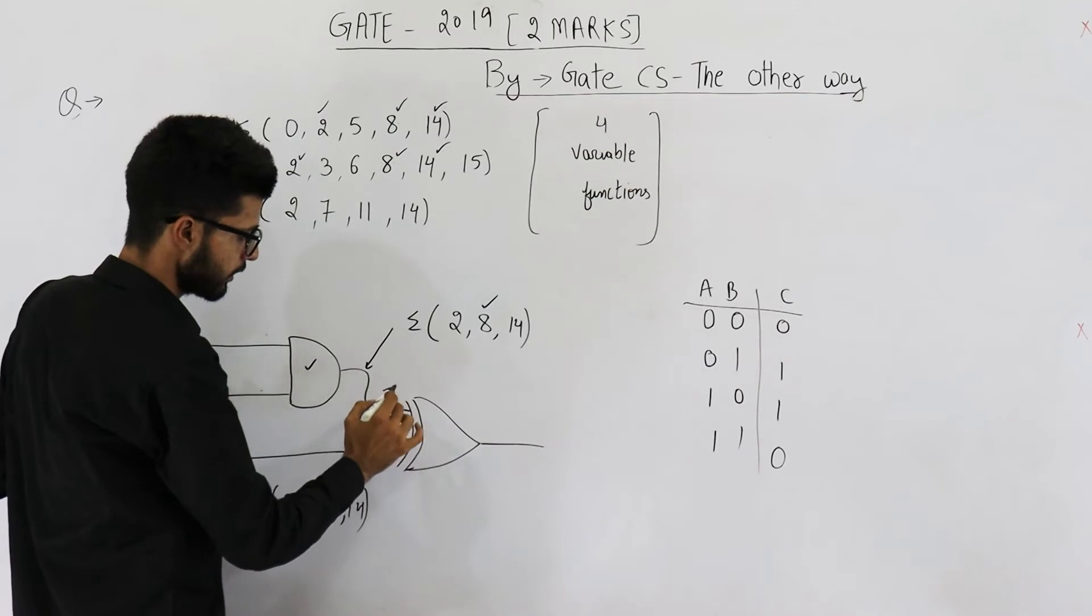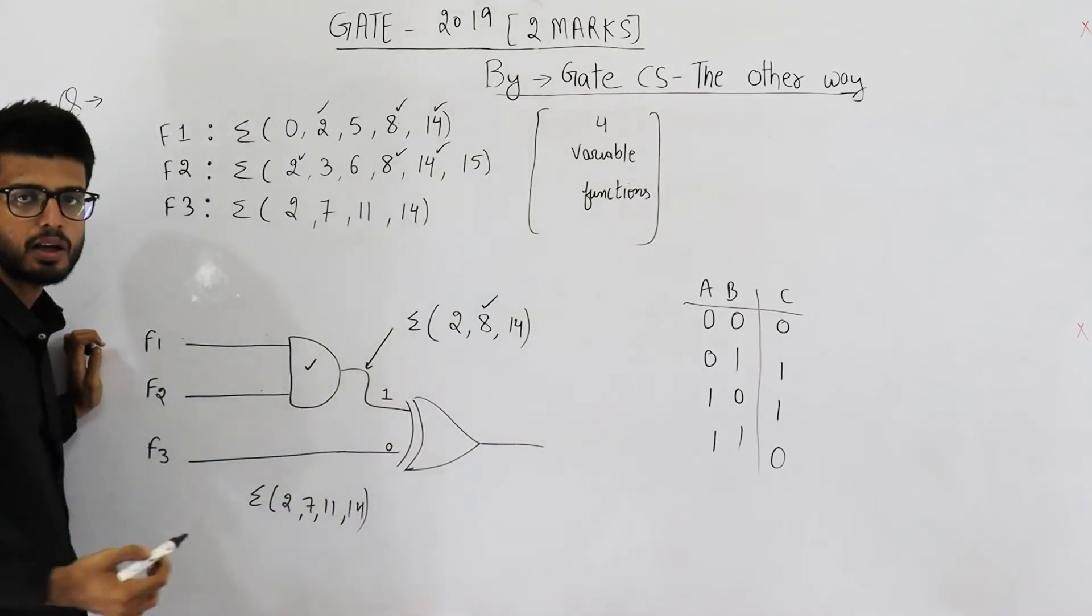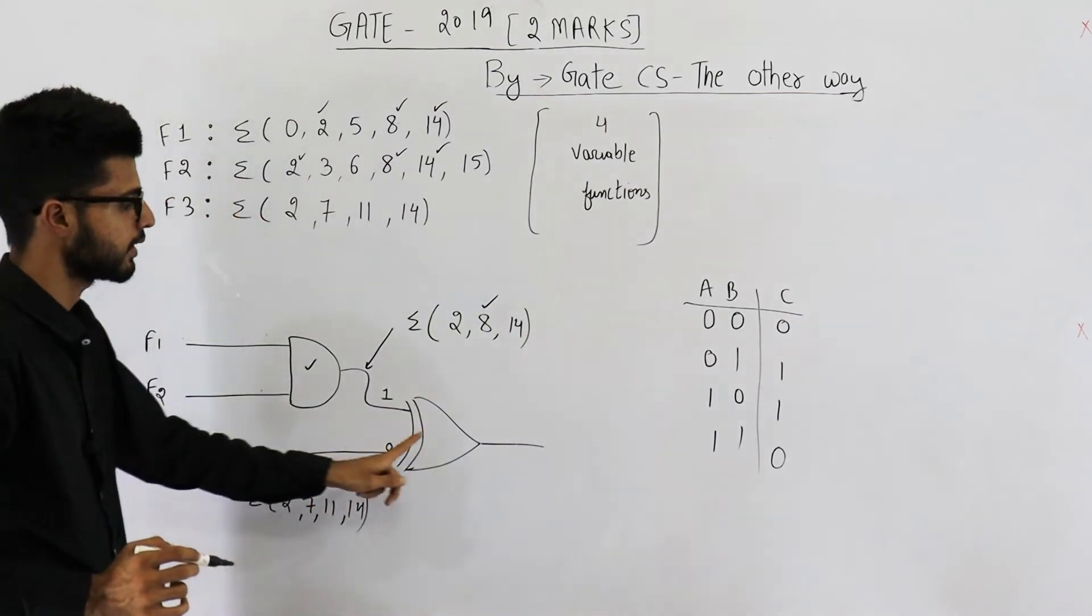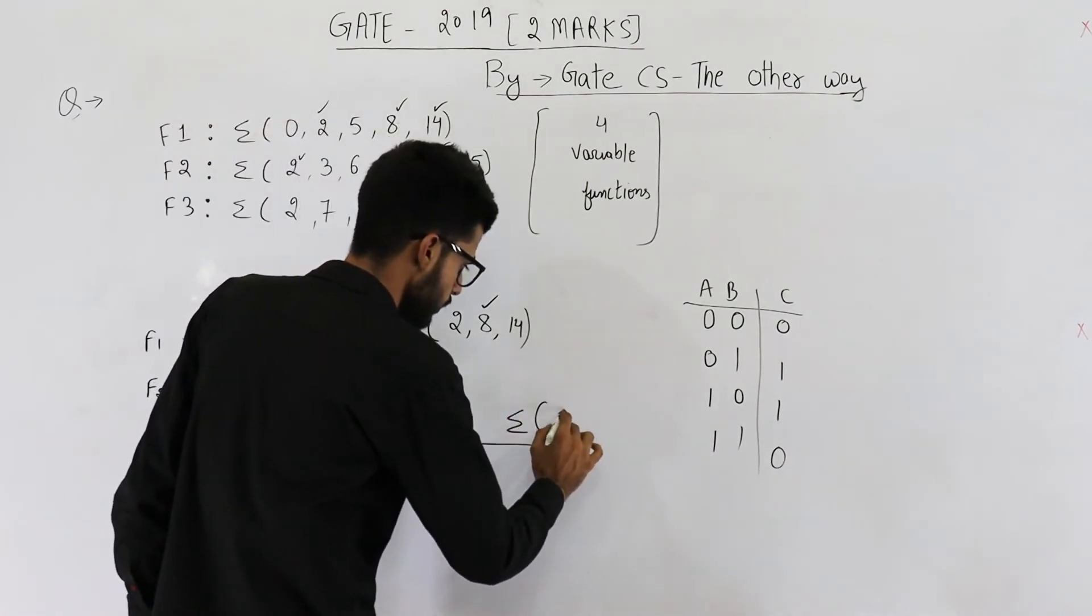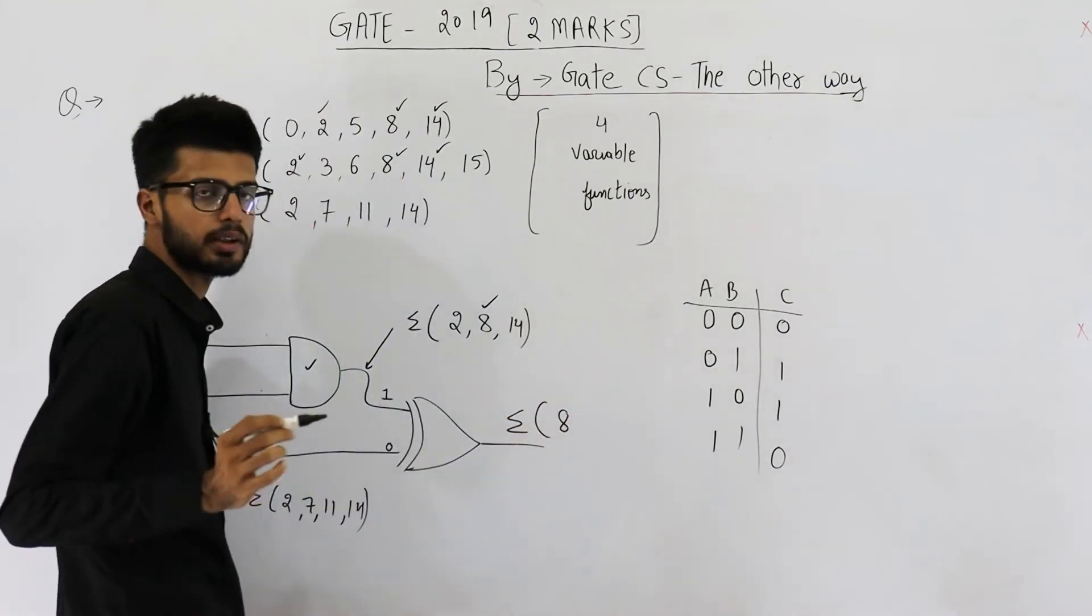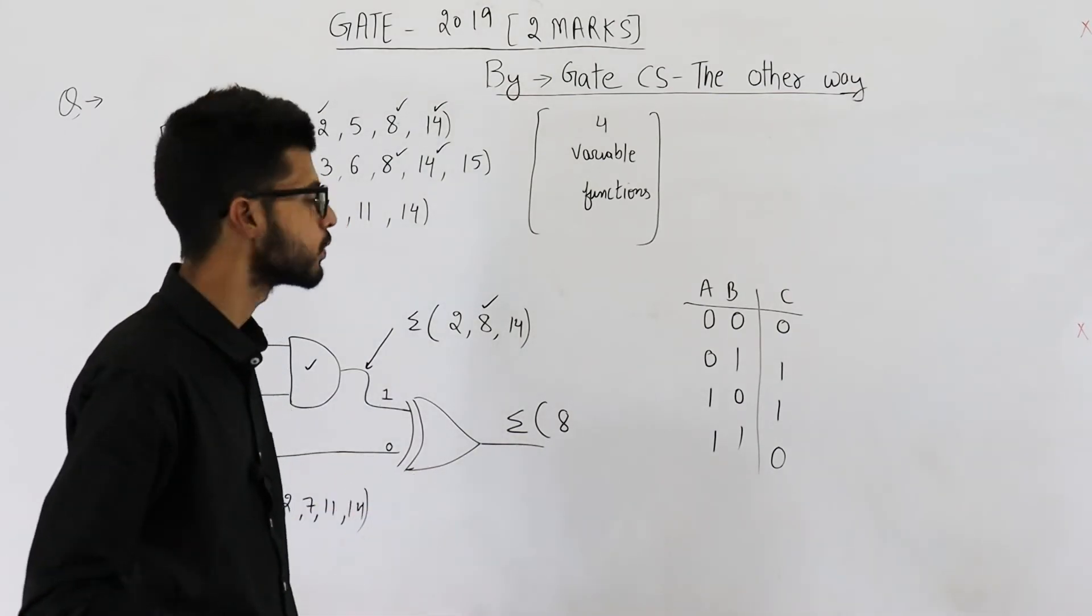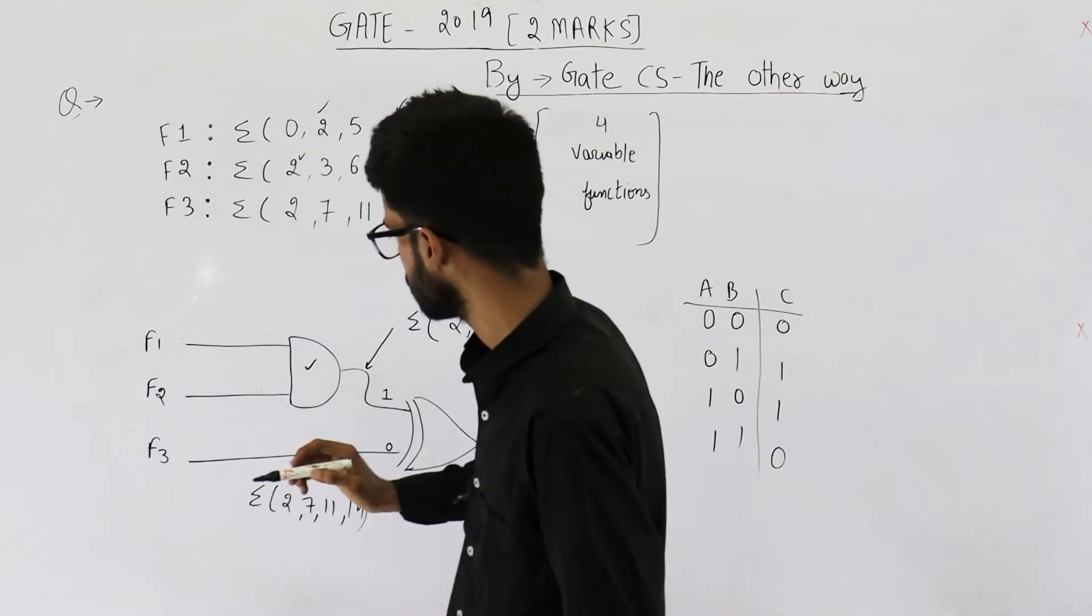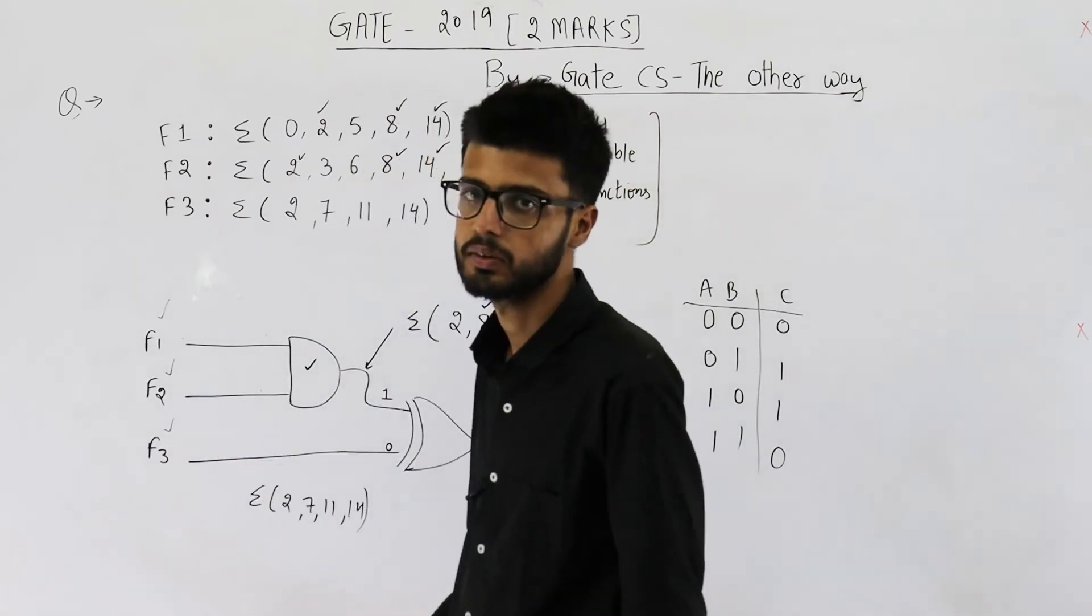So you will get a 1 here and you will get a 0 here because this function will not output a 1. So exactly one of the inputs to this XOR gate is high. That means in its output you will surely have 8. This will output high in case of input equals 8. What do I mean by saying input equals 8? That means 8 is given as an input to all these three functions.